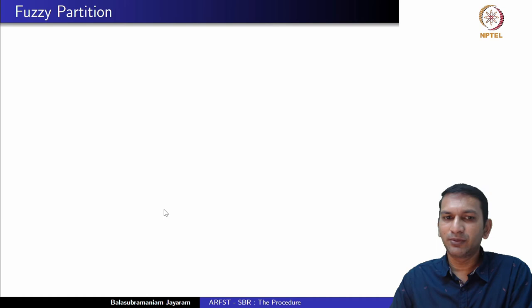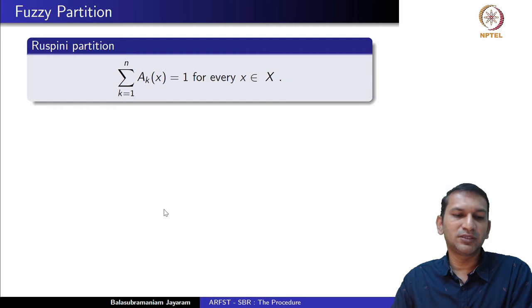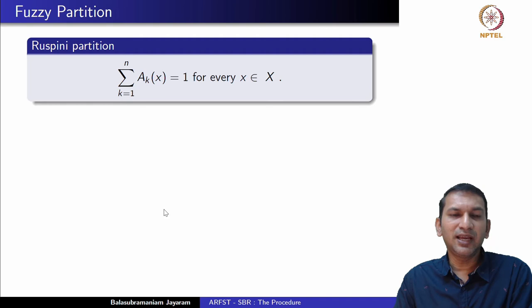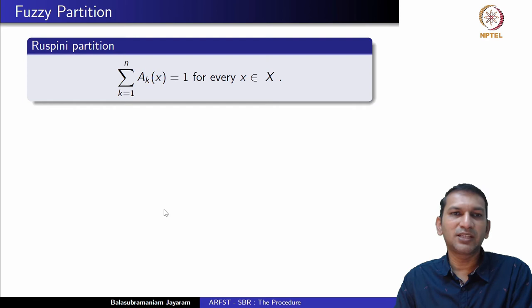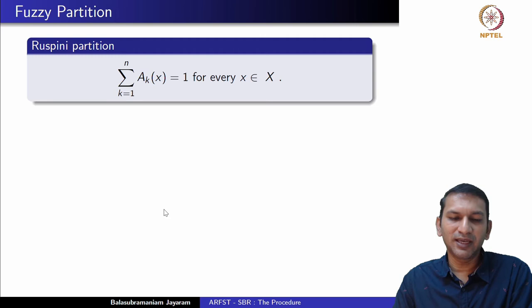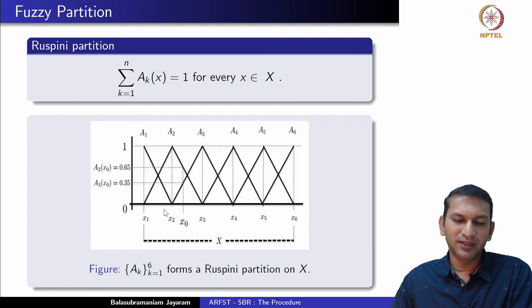Fuzzy covering is different from a fuzzy partition. One particularly useful partition is the Ruspini partition, which requires that the collection of fuzzy sets forms a cover, and additionally, for every element x, the sum of its membership degrees across all fuzzy sets equals 1. This equation automatically implies that for every x there exists some k such that A_k(x) is greater than 0, meaning the collection also forms a cover.